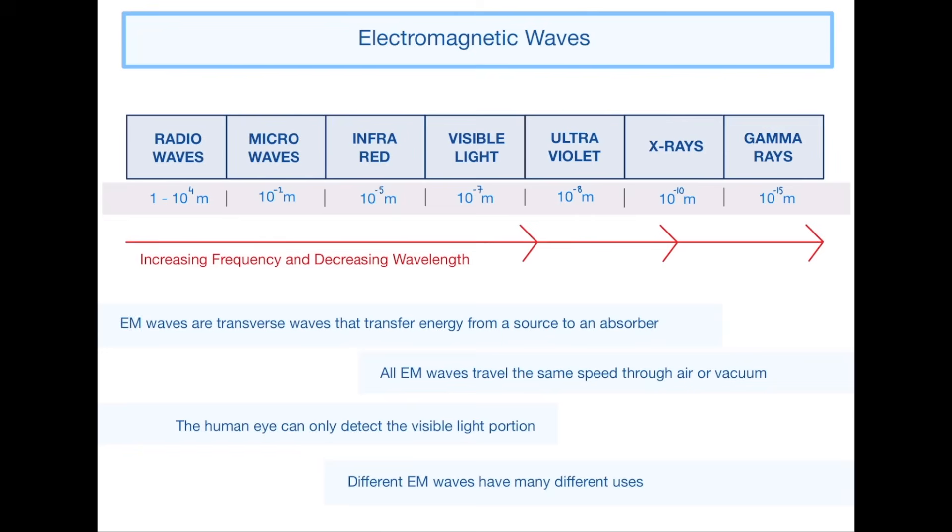As those electromagnetic waves go along, the wavelength is decreasing and the frequency is increasing. Those numbers I've written underneath indicate the wavelengths of each of those things. Radio waves have a wavelength of roughly anything between a meter and 10^4 meters, which is 10,000 meters. Microwaves are 10^-2 meters, so that's kind of like 10 millimeters. Infrared is 10^-5, so then you're talking 10 micrometers, and then it just gets smaller and smaller from there.